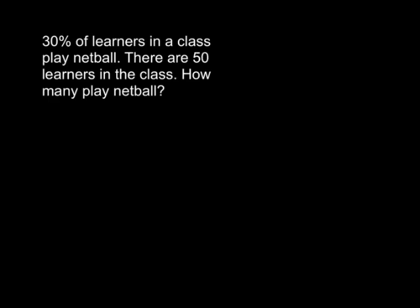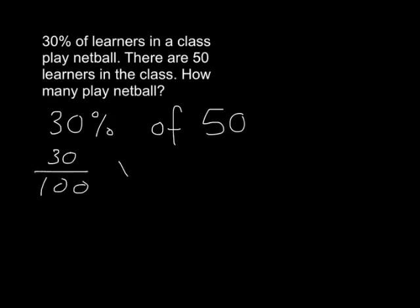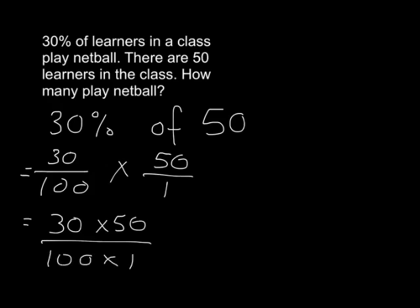Let's check. We want to know what 30% of 50 is. Well, 30% as a fraction is just 30 over 100, and we want to work out what that is of 50, which we write as 50 over 1. Multiplying fractions gives us 30 times 50 over 100 times 1. We can simplify: 50 goes into 50 once, and 50 goes into 100 twice. Then 2 goes into 2 once and into 30 fifteen times. So we get 15 times 1, which is 15, over 1 — which is 15.